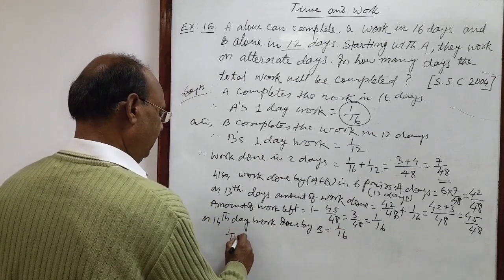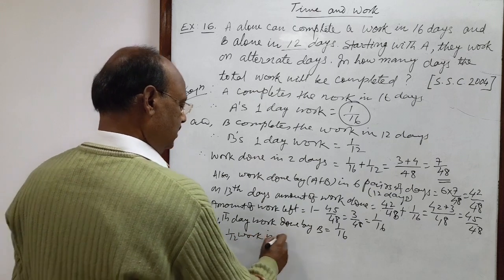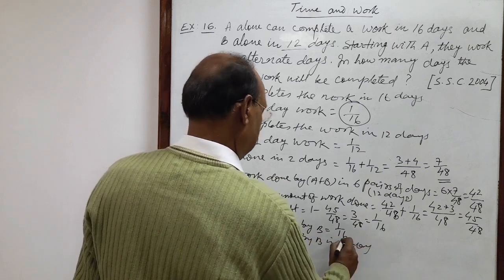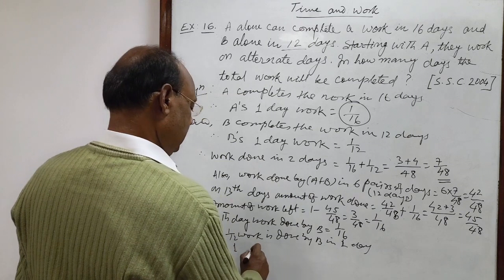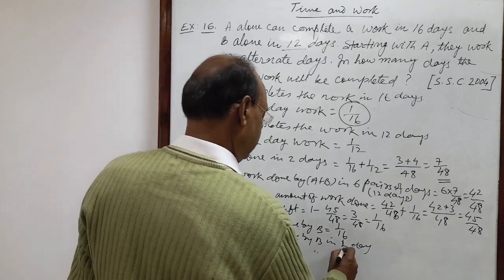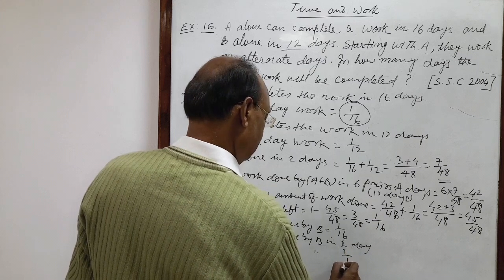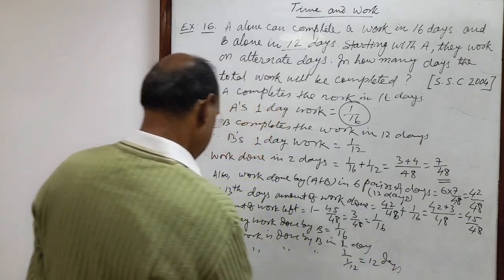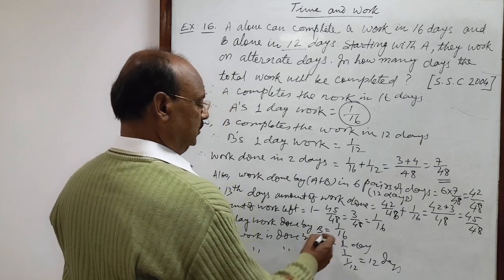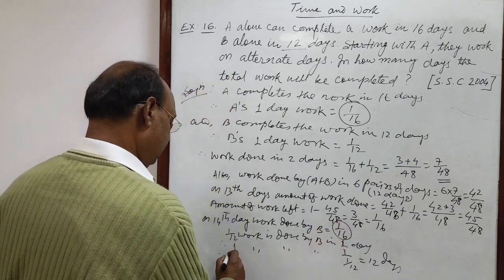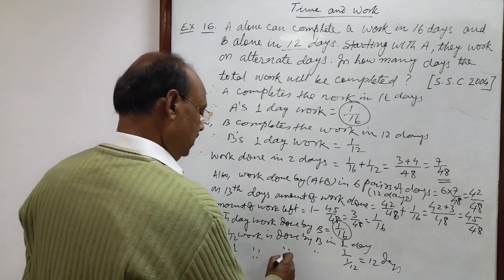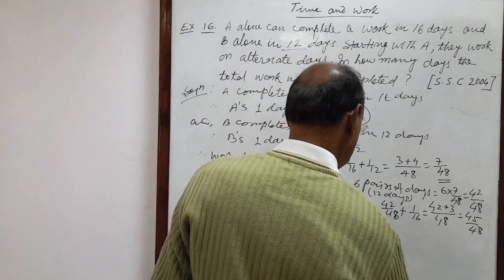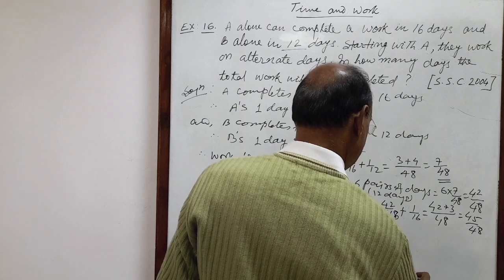1/12 work is done by B in 1 day, therefore 1 work is done by B in 1 upon 1/12, this is equal to 12 days. Therefore, 1/16 work has been left, so 1/16 work is done by B in how many days? 12 into 1/16, this is equal to 3/4 days.